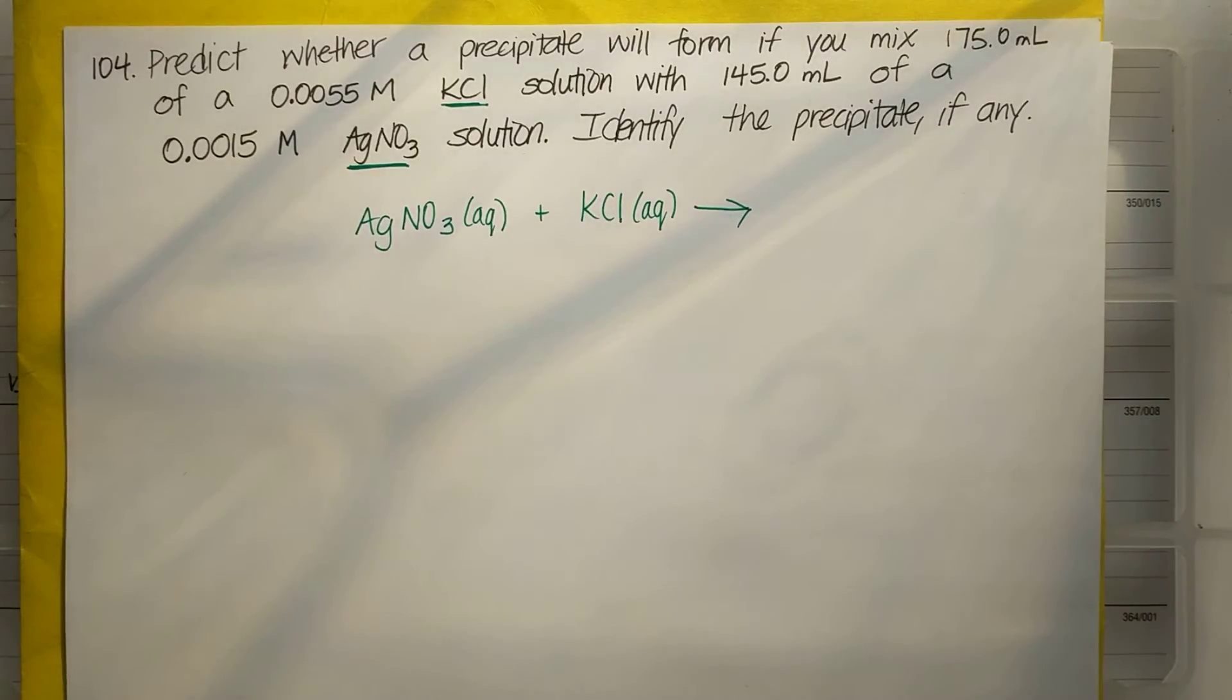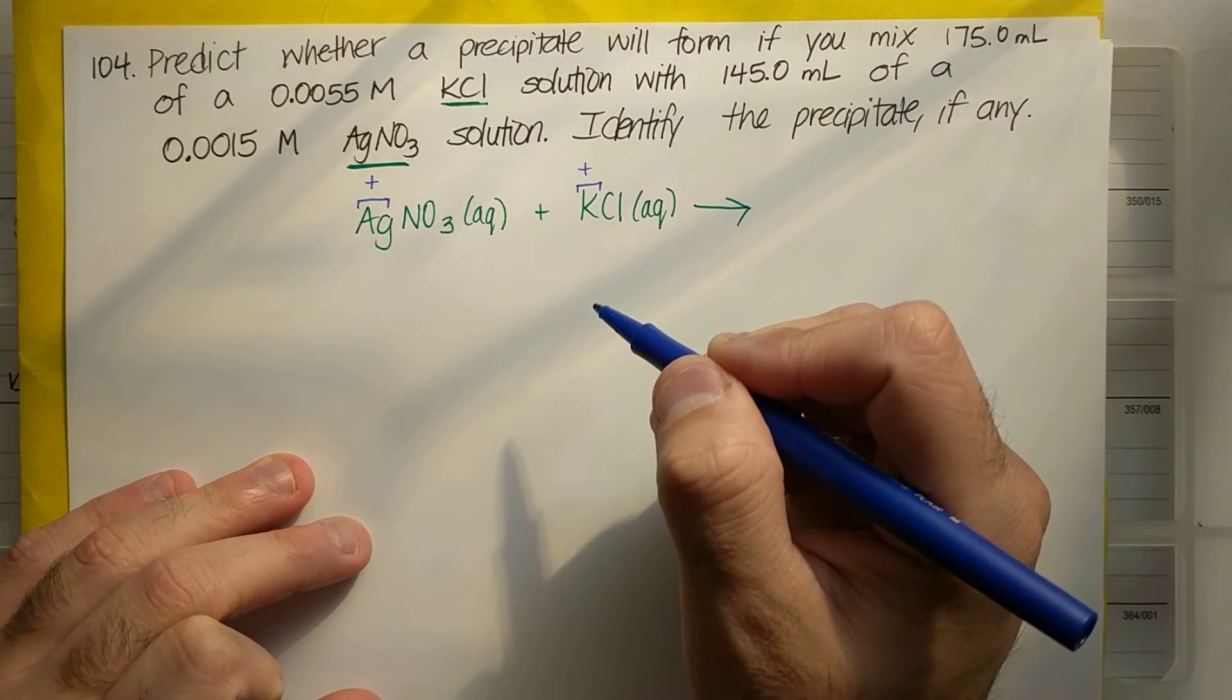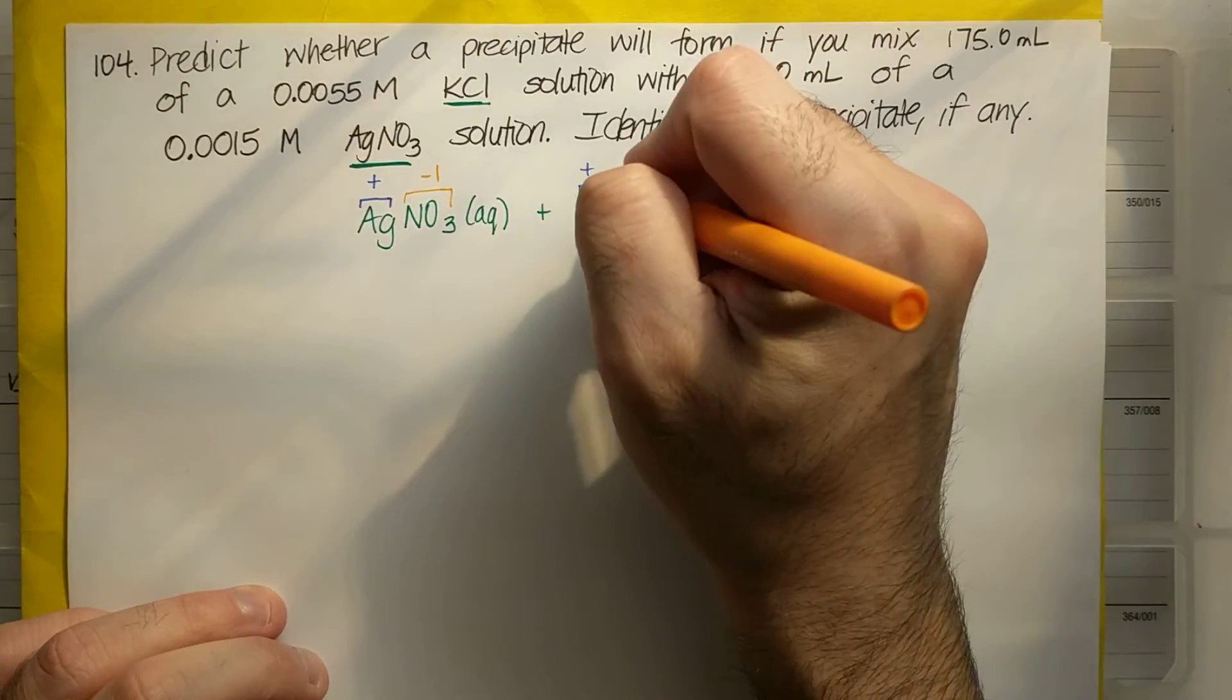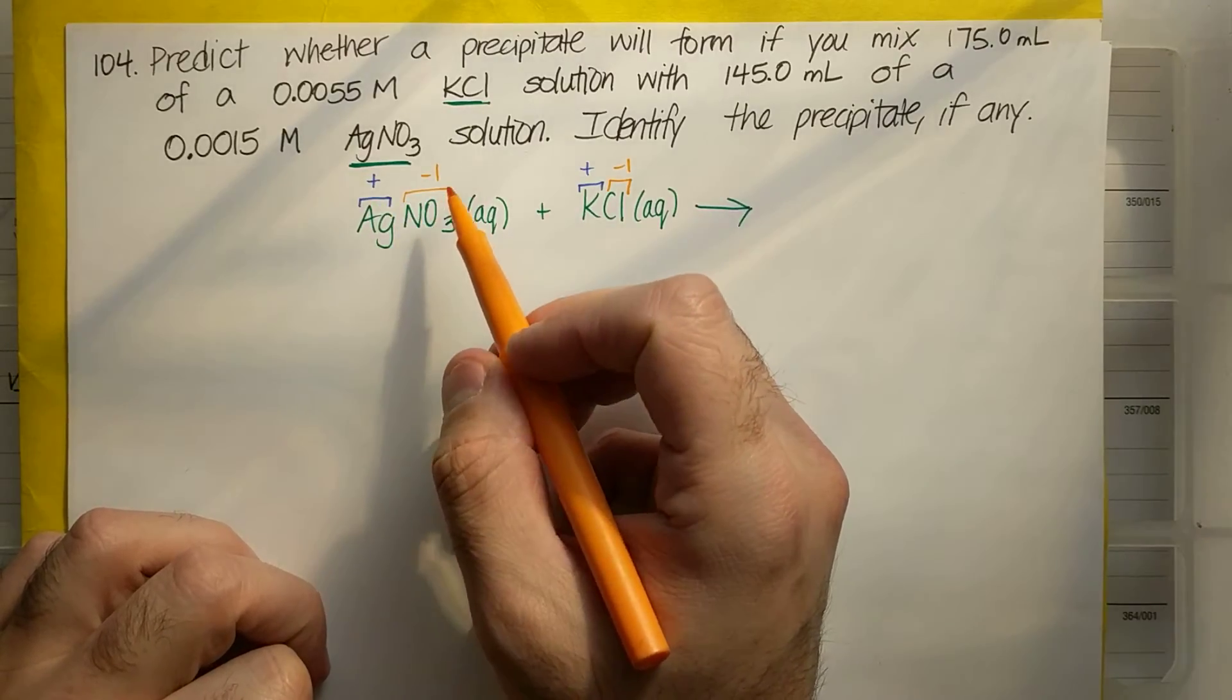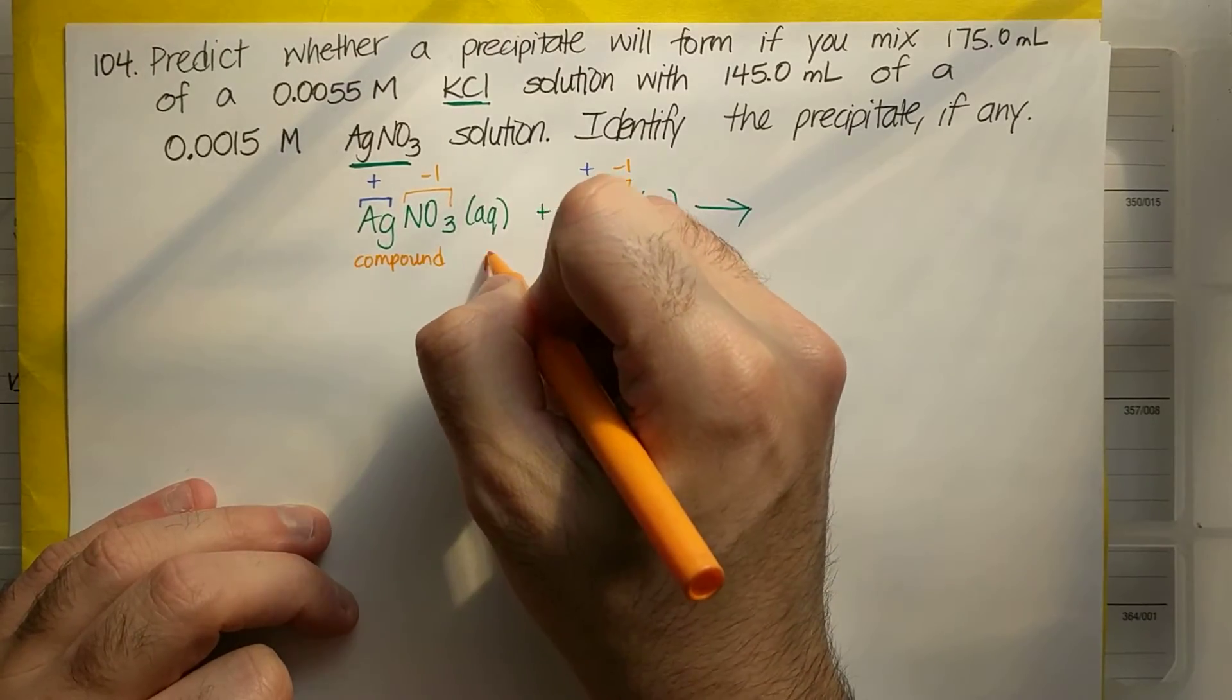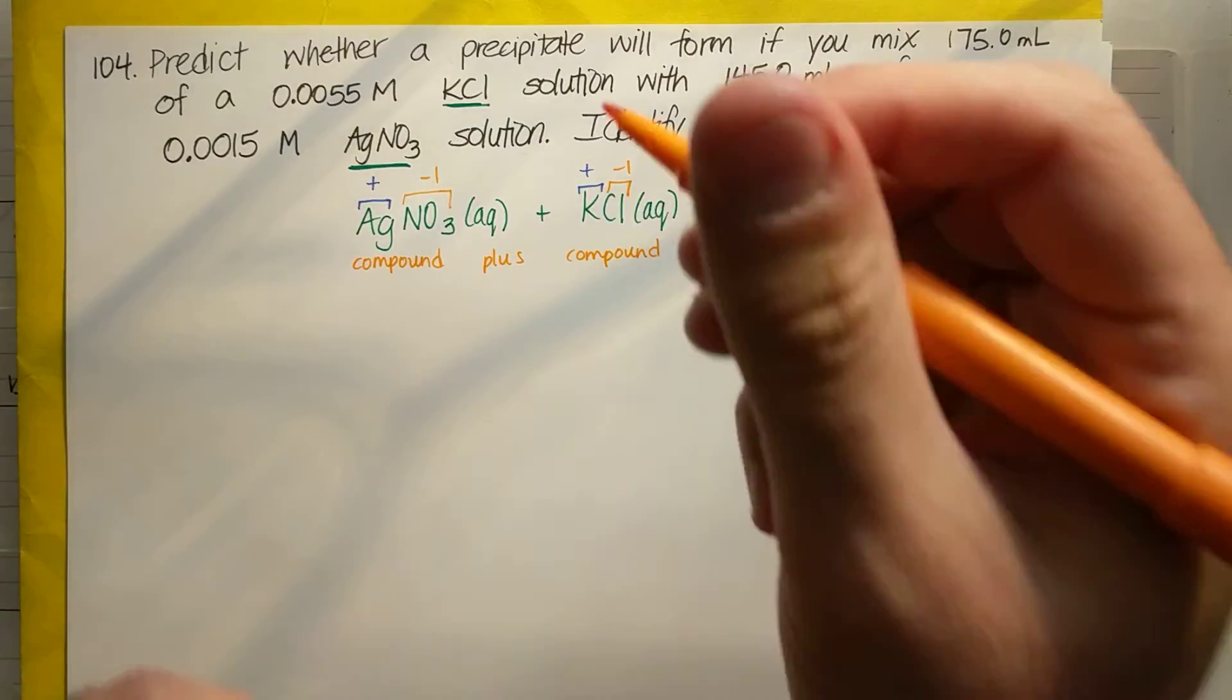But just as an aside, all of my elements or polyatomic ions on the left, those are positive. So my K plus and my Ag plus and then my elements or polyatomic ions on the right, those are negative. So this is minus one, minus one. So it just ends up being that I know that silver is plus one. NO3 is nitrate so that's minus one. K is plus one and Cl is minus one. And if I have a compound plus a compound, do we remember what type of chemical reaction this is? If I have two compounds mixed together? This will be a double replacement.